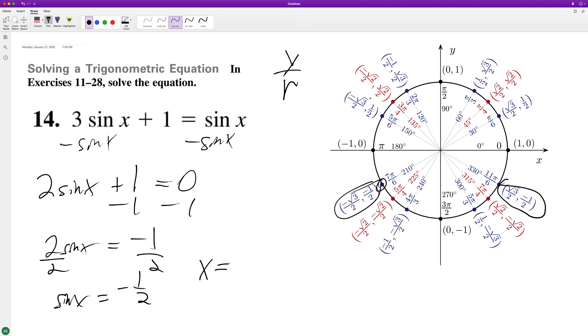So x is going to be equal to 7 pi over 6 plus 2 pi n. And then it's also going to be equal to 11 pi over 6 plus 2 pi n.